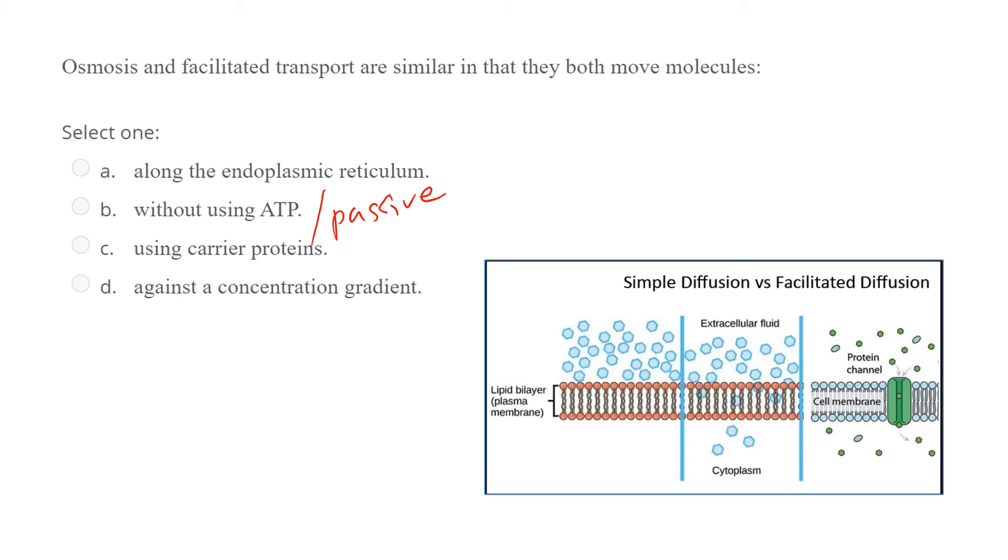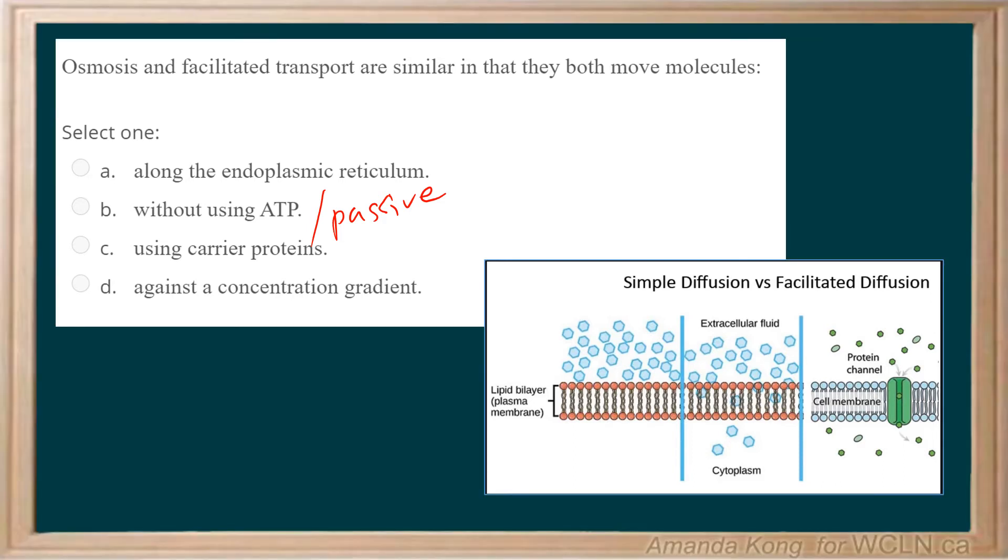D against a concentration gradient. Facilitated diffusion is the movement of a molecule from an area of high to low concentration with the help of protein channels or carriers. So you're going from a high concentration to a low concentration.